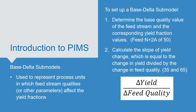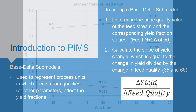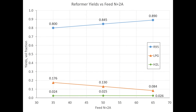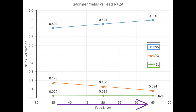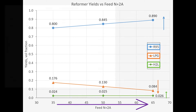Then we must calculate the slope of yield change, which is equal to the change in yield divided by the change in feed quality. In our example, these are at 35 and 65 for N plus 2A. For example, in the reformer submodel, when the feed stream quality N plus 2A increases, the production of hydrogen and 95 octane reformate rise while production of LPG drops, as you can see in the chart here.